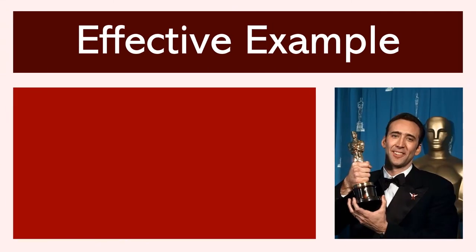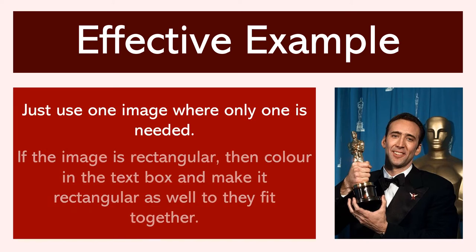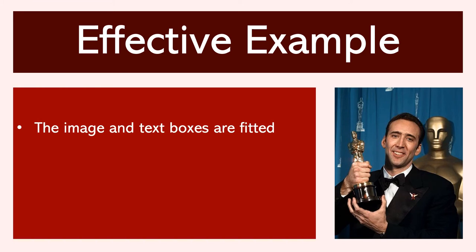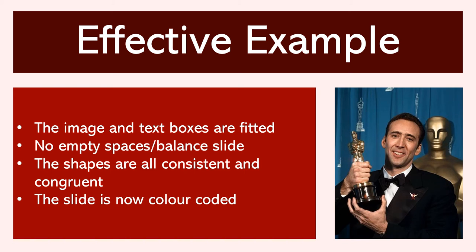So let's fix the issues with that last slide. First, we just use one image where only one image is needed. In addition, if that image is rectangular, then we're going to color-code the text box and make it rectangular as well so that they fit together. This resolves all the issues from the previous slide. The image and text are now fitted together, there's no empty spaces, and the slide is balanced. The shapes are all consistent and congruent with each other, and we now have a color-coded slide. As a result, your audience won't even notice — they'll see a balanced, even slide and be focused on the text and messaging rather than having their attention drawn to other issues.